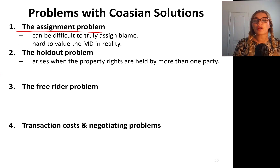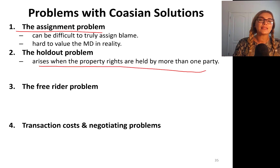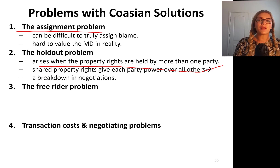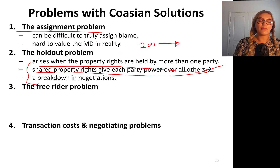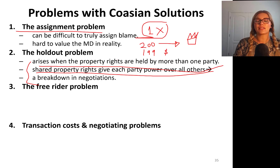The holdout problem arises when the property rights are held by more than one party. Shared property rights give each party power over all others, and this can cause a breakdown in negotiations. For example, if 200 fishermen want to come together to negotiate with the factory, 199 of them are willing to pay, but one fisherman refuses to pay — there's a holdout in this case.